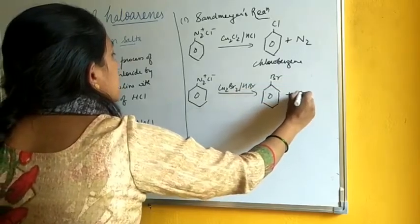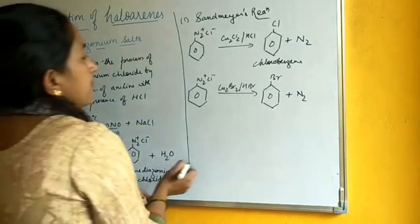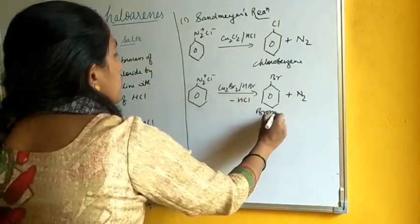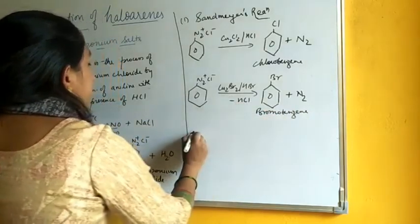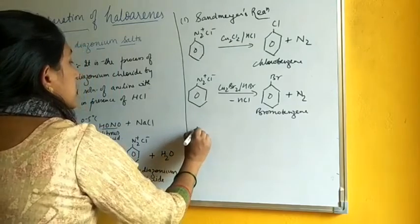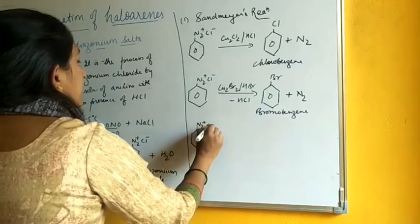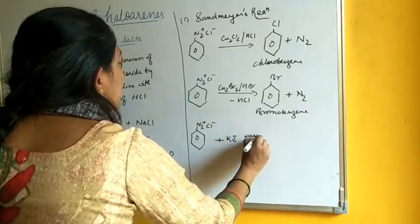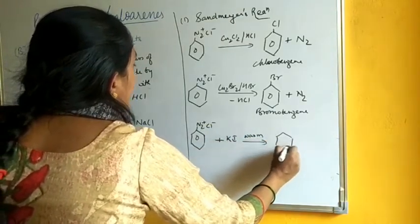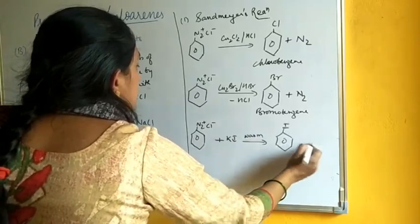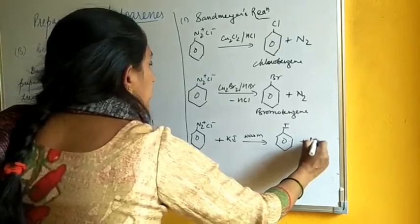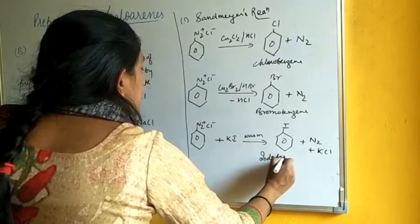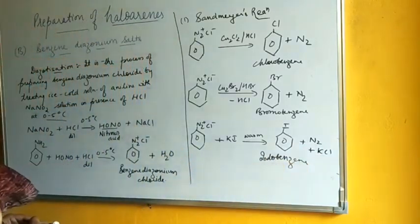For bromobenzene, use cuprous bromide and HBr — nitrogen gas is removed and bromobenzene is formed. For iodobenzene, treat benzene diazonium chloride with potassium iodide and warm the solution to get iodobenzene.